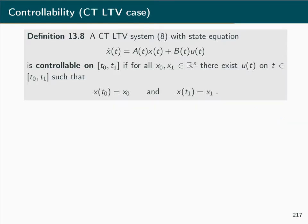All the concepts defined for discrete time systems carry over almost analogously to the continuous time case. In definition 13.8, a continuous time linear time varying system with its state equation is called controllable on the time interval from t0 to t1 if for any choice of initial state x0 and target state x1, there exists a control input u(t) on [t0, t1] such that x(t0) = x0 and x(t1) = x1.